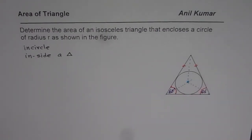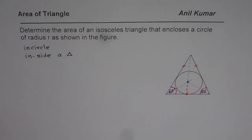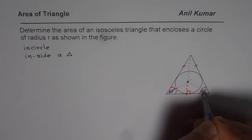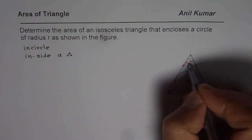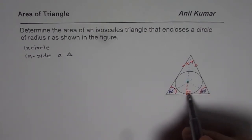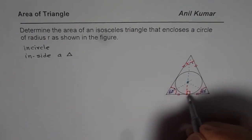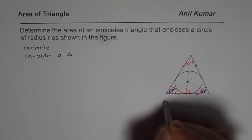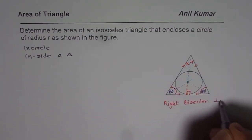If I extend the line from the apex, it should meet the center of the incircle. This is a very special case: we have an isosceles triangle, and when these two base angles are equal, if I bisect the apex angle, we get two congruent triangles. Since this angle equals that angle and we already have 90 degrees, these are exactly congruent triangles with a common side. So the base is cut in half, meaning the angle bisector is also the right bisector — that is, it is perpendicular to the base.